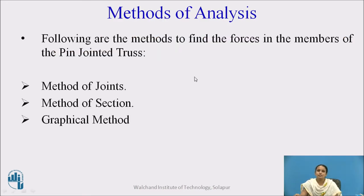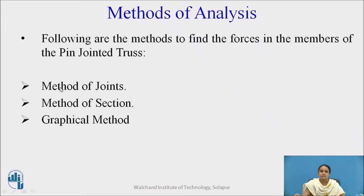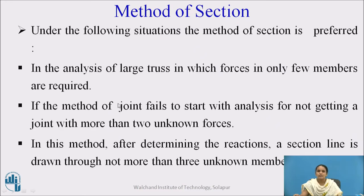For the analysis of truss, we have three methods: method of joint, method of section, and graphical method. The first two are analytical methods and the second one is graphical method. The method of section is adopted when you have to find out the forces in few members of the truss from the entire truss.